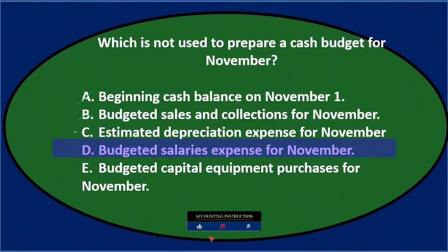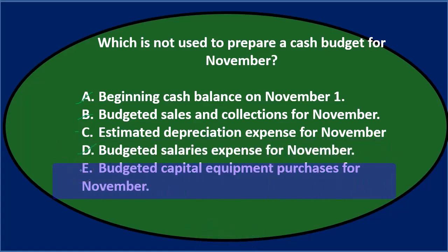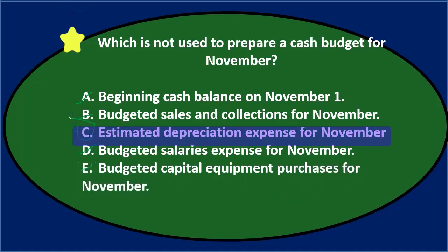D. Budgeted salaries expense for November — it says expense and not cash paid, but I'm going with C. E. Budgeted capital equipment purchases — clearly we would have to consider any cash payments for capital expenditures, things like property, plant, and equipment. Final answer: C. Estimated depreciation expense for November is not used to prepare a cash budget for November.